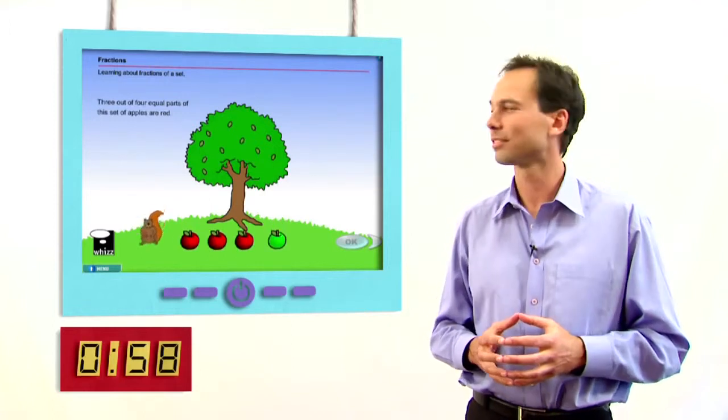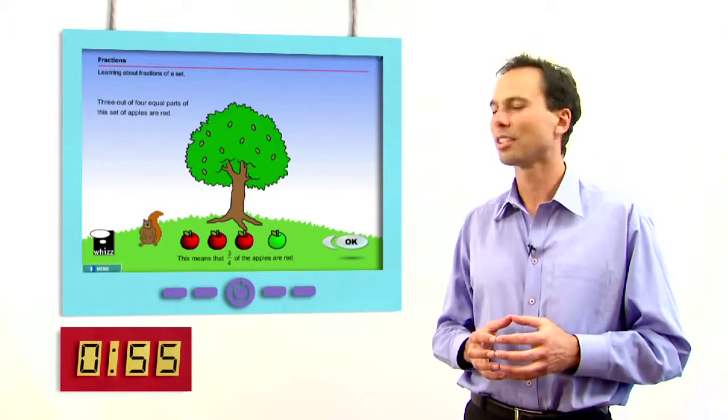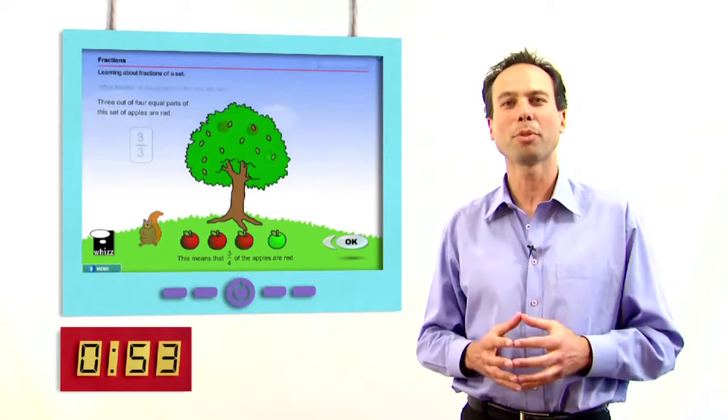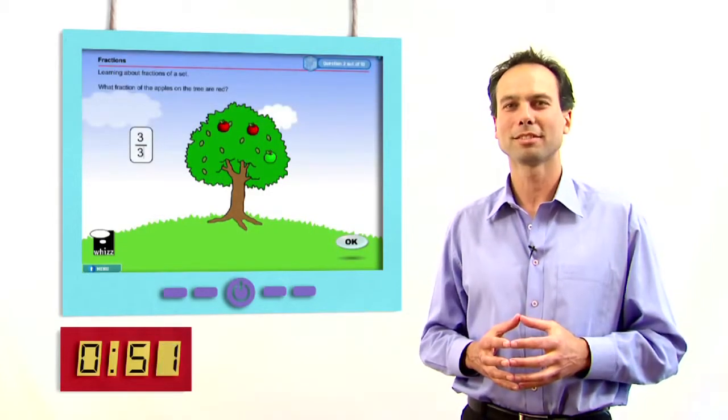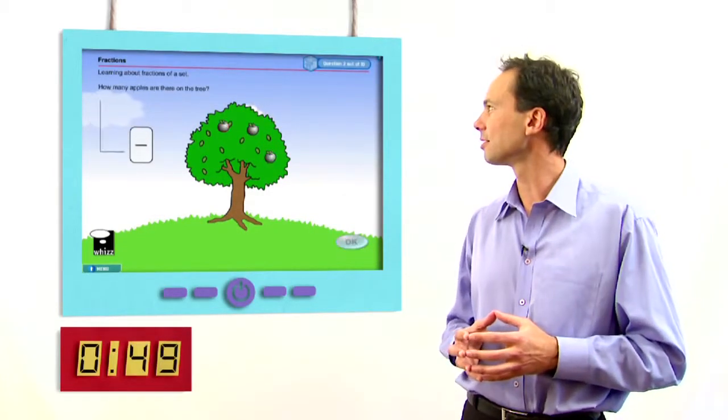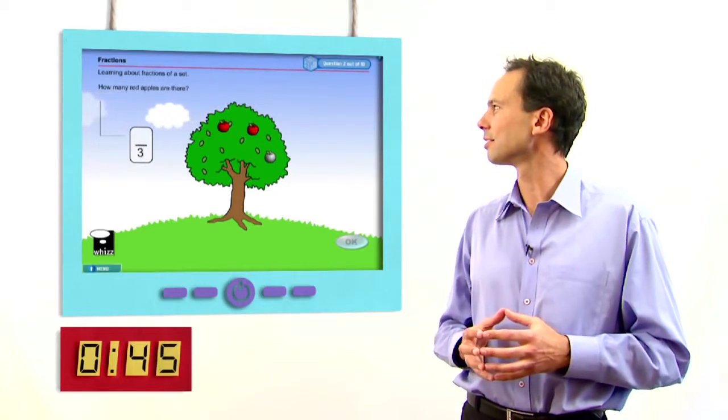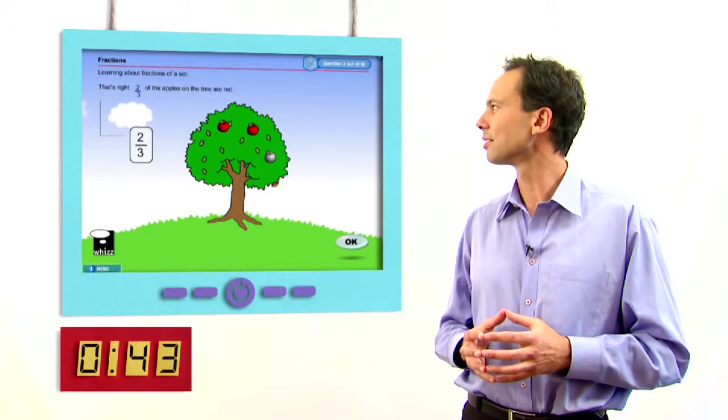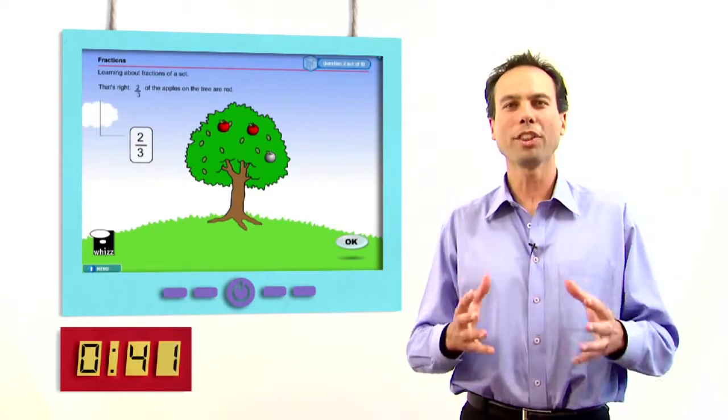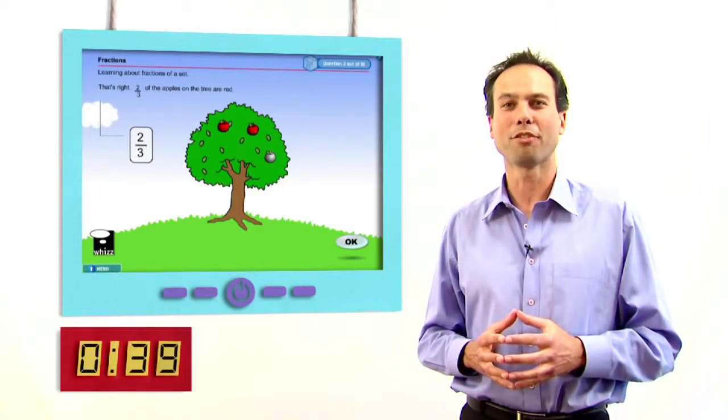Three out of four equal parts of this set of apples are red. So three quarters of the apples are red. Providing extra help when your child needs it. How many apples are there on the tree? How many red apples are there? All this helps your child gain in confidence.